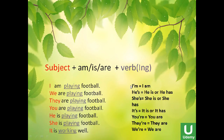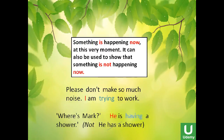Now in pronunciation, we usually use contractions: they're equals they are, you're equals you are, I'm equals I am, we're equals we are. He's can equal he is or he has — it depends on what follows. So 'he's a good man' means he is, but 'he's got three cars' means he has. The same idea applies to she's — she is or she has — and it's — it is or it has.